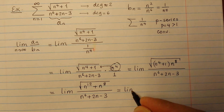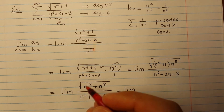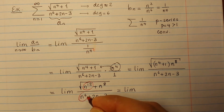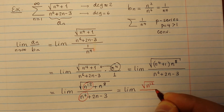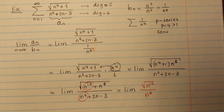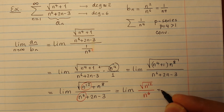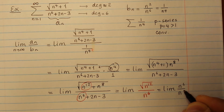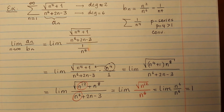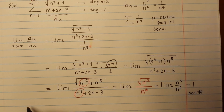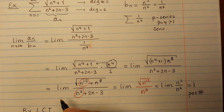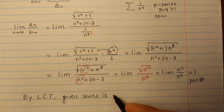Taking the limit, the largest power of n in the numerator under the radical is n to the 12, and at the bottom the largest power is n to the 6. So this simplifies to the limit of the square root of n to the 12 divided by n to the 6, which is the limit of n to the 6 over n to the 6, namely 1. We take the limit of an over bn and get a positive number, which means these two series have the same behavior.